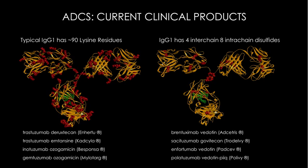These products fall into two bins based on how the payload and linker are conjugated onto the antibody. On the left, a typical IgG has approximately 90 lysine residues, and various payloads have been conjugated through linkers to these lysines. The other common conjugation type is through disulfide bridges — in a typical IgG there are four inter-chain and eight intra-chain disulfides. The inter-chain reduce readily, enabling chemistry on free thiols; four products use this chemistry.